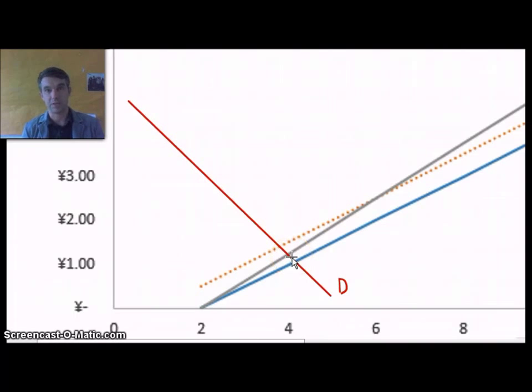So this would correlate to that first spot, where with the ad valorem tax, the price would be 1.25, but with the specific tax, it would be 1.50.